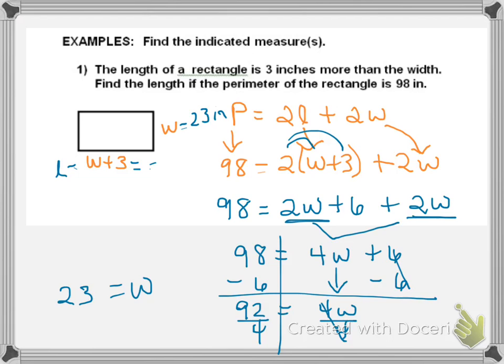And my length, my L, is 23 plus 3, which is 26. Then you could plug those numbers into the perimeter formula, not quadratic formula. That's algebra 2. And make sure you get 98.